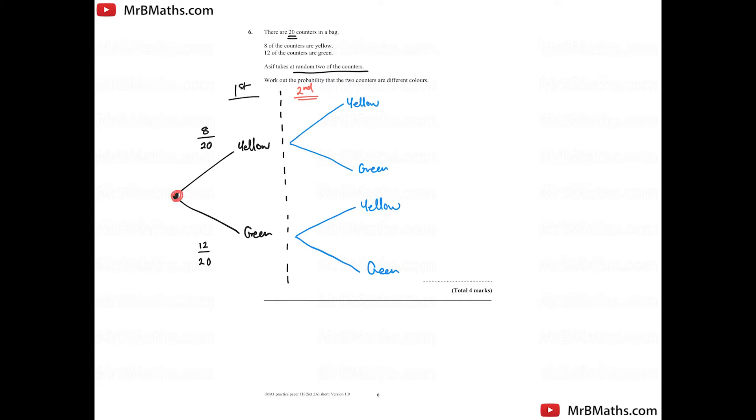So if we imagine starting through here and following like a path, at this point here, 1 has been taken. So in this case, if I follow this path, a yellow has been taken. So that means that the counters now, there is now one less. So this fraction would become 7 out of 19. It was 8, but if I've just chosen a yellow, it's now become 7. So 7 out of 19. If I have gone this route, I have selected a yellow, not a green. So the green will stay as 12. But this will also become out of 19.